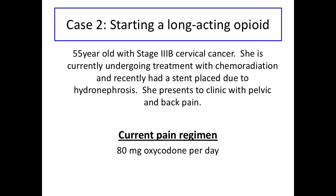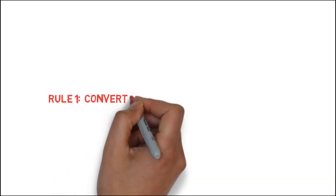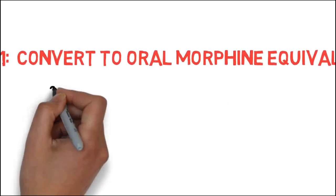Case two works through an example of starting a long-acting opioid in a patient currently taking short-acting opioids. A 55-year-old with stage 3B cervical cancer, recently with a ureteral stent placed due to hydronephrosis, is undergoing chemoradiation and presents with pelvic and back pain. She is taking an average of 80 mg of oxycodone per day with moderate pain control, but is tired of frequent dosing and waking at night. We decide to transition her to a long-acting opioid. First, we calculate the 24-hour OME: 20 mg of oxycodone is equivalent to 30 mg of oral morphine.